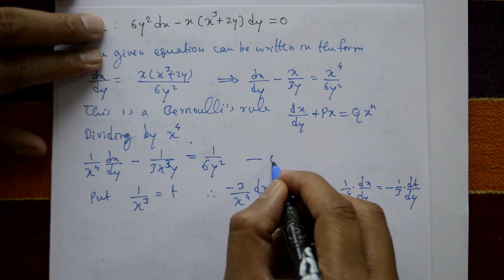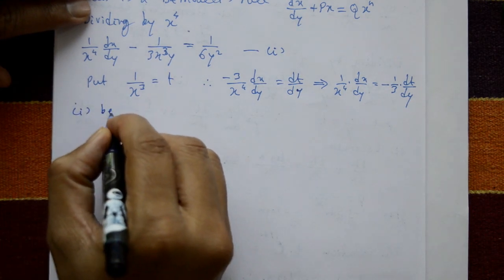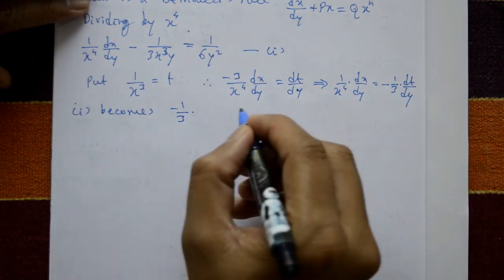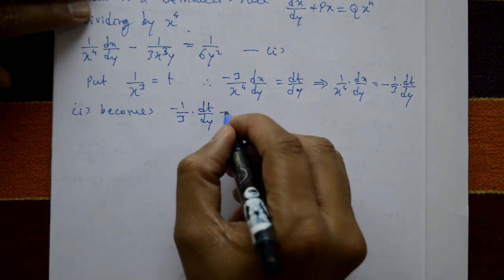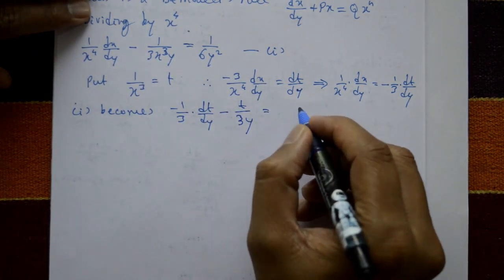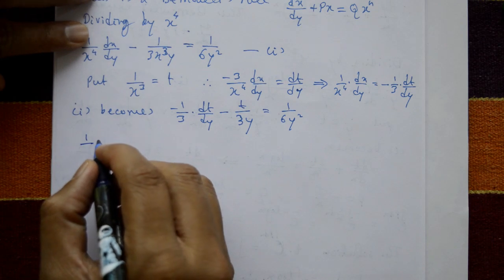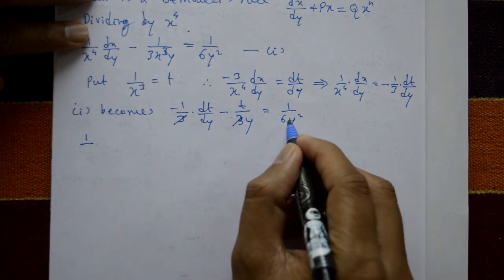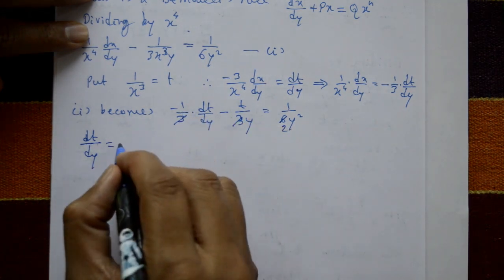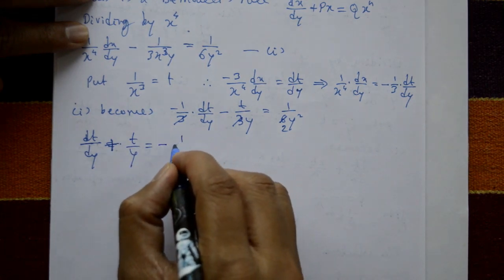Substituting these results into equation number 1: minus 1 upon 3 times dt by dy, minus t by 3y, equals 1 upon 6y squared. Changing sign and multiplying through by 3 (so 3 and 3 cancel), this becomes: dt by dy plus t upon y equals minus 1 upon 2y squared.